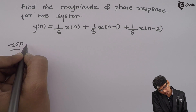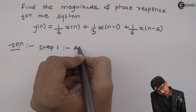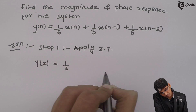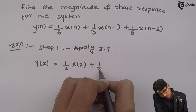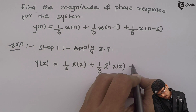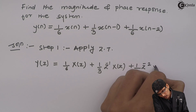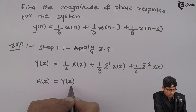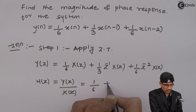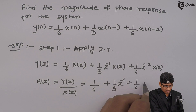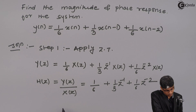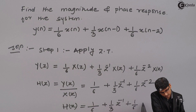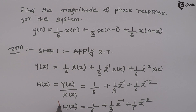Step 1 is to apply the Z transform. Applying Z transform: Y(z) = (1/6)X(z) + (1/3)z⁻¹X(z) + (1/6)z⁻²X(z). Then H(z) = Y(z)/X(z) = 1/6 + (1/3)z⁻¹ + (1/6)z⁻². So this is my H(z).